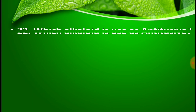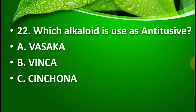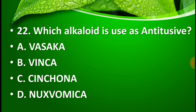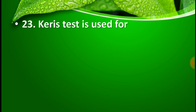Question number 22: Which alkaloid is used as an antitussive agent? Option A: vasaka, option B: vinca, option C: cinchona, and option D: nux vomica. You may pause the video to think about the right answer. The right answer is option A — vasaka alkaloid is used as an antitussive agent.